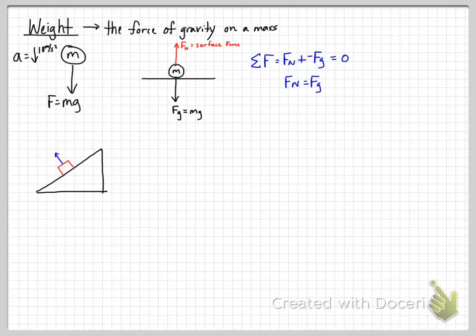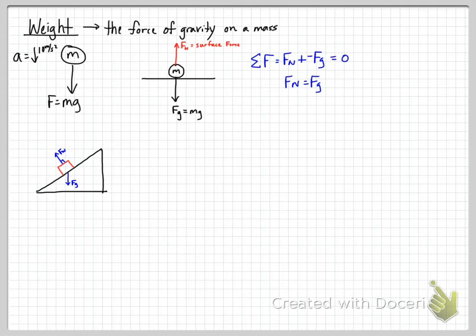The normal force is a surface force. If we have a ramp with an object on it, the surface force is always at a 90-degree angle — perpendicular — to the surface, pushing straight out from it. The normal force changes direction based on the surface, while gravity is always straight down toward the center of the Earth. So for a box on a ramp, gravity still acts straight down but the normal force is perpendicular to the ramp's angled surface.